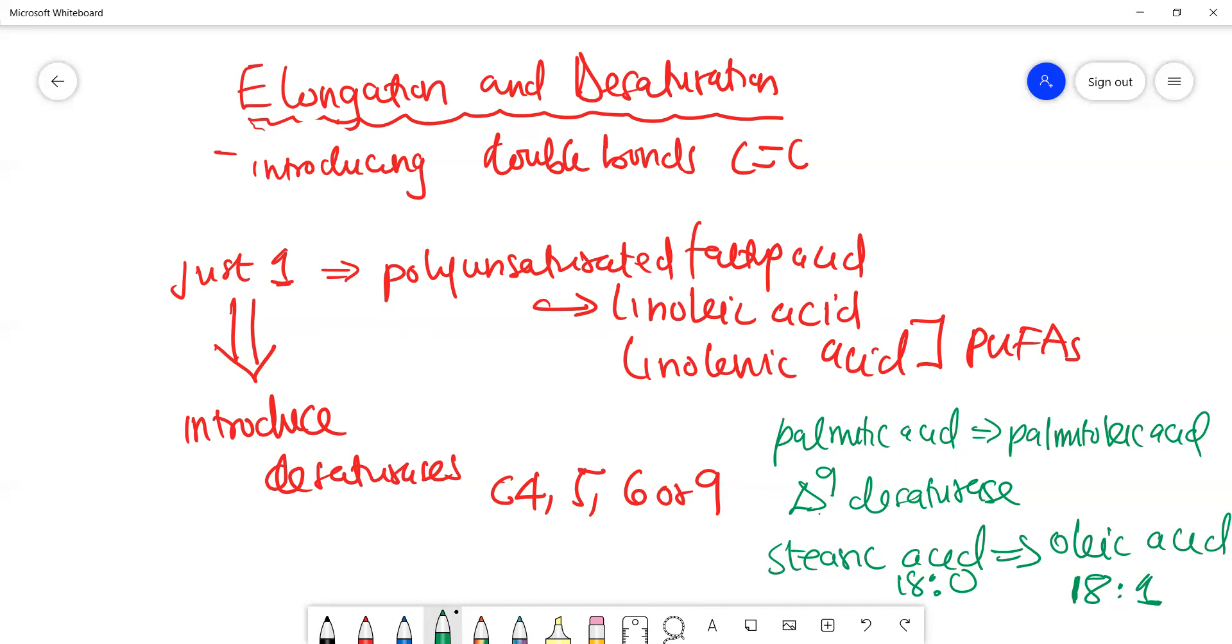So these enzymes, the desaturases, are very specific for the position that the double bond should be introduced: carbon 4, 5, 6, or 9 - no other place. The extension is limited to two carbons. Desaturation, or introducing those double bonds, is limited to positions 4, 5, 6, or 9. And the enzymes are very specific for those positions.